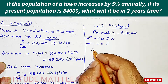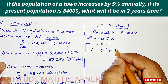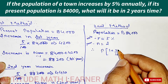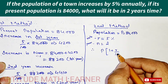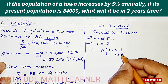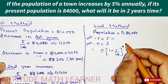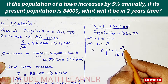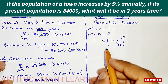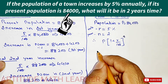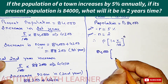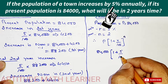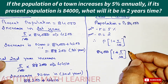So we use the formula: P times (1 plus R divided by 100) to the power N. R is 5, the 100 comes from the percent, and N is 2 years. Substituting values: 84,000 times (1 plus 5/100) squared.